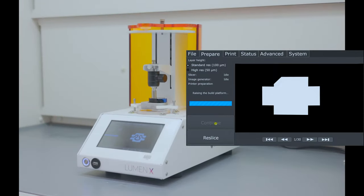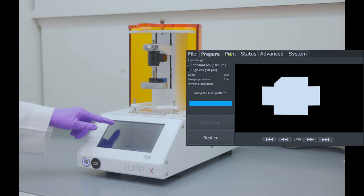Now, the build platform raises. Now, we go to the next menu, which is the print menu.